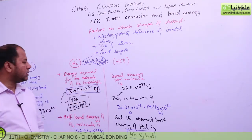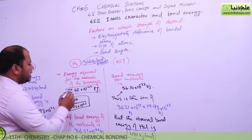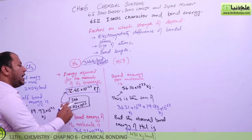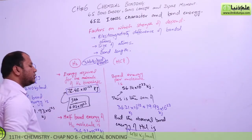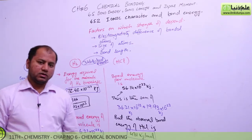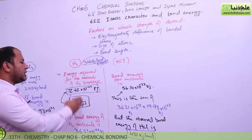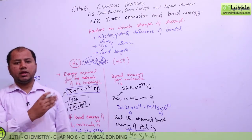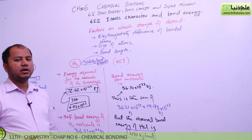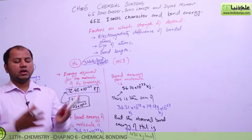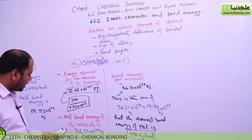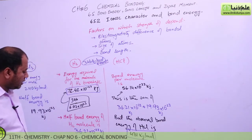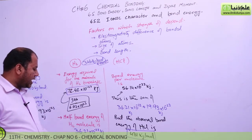This is the energy required for one molecule of hydrogen atom breakage: 72.42 × 10⁻²³ kilojoules. If we halve it, one atom contributes half the energy. So half the energy is released by one atom — that is 36.21 × 10⁻²³ kilojoules — which is the half energy for one hydrogen atom in the molecule.